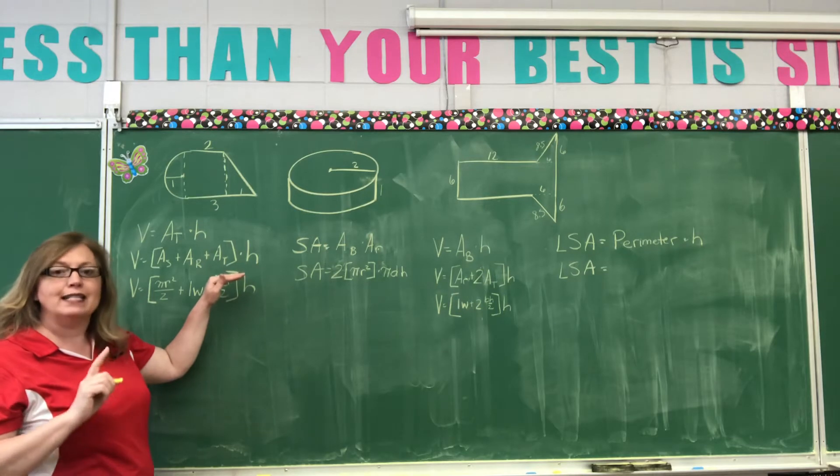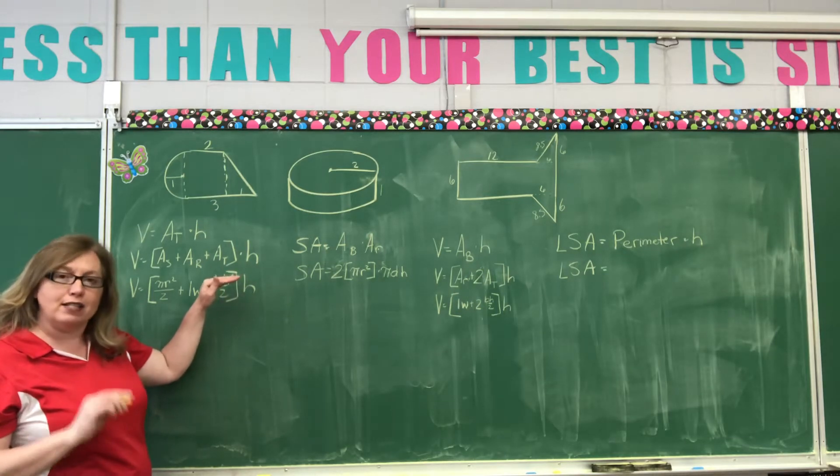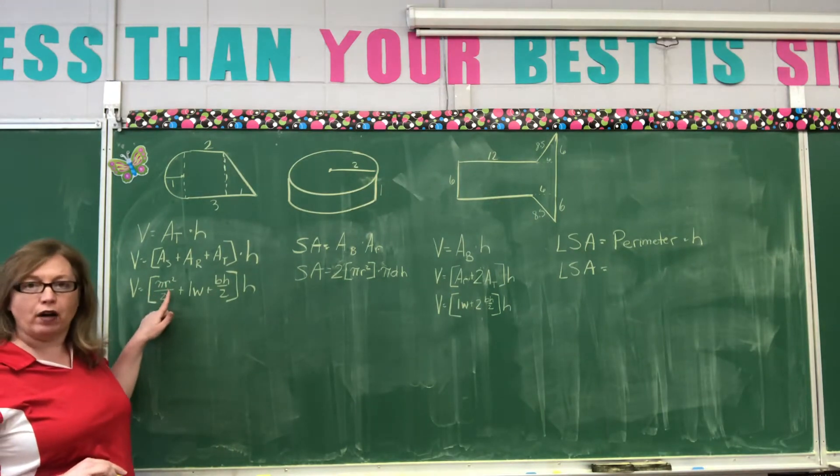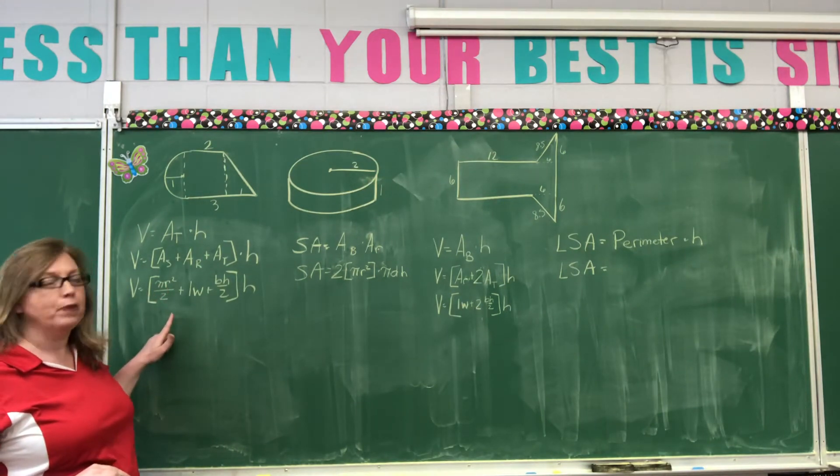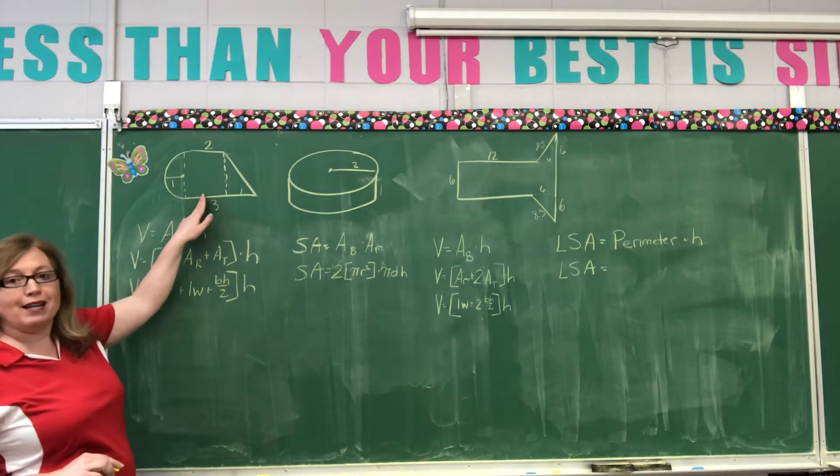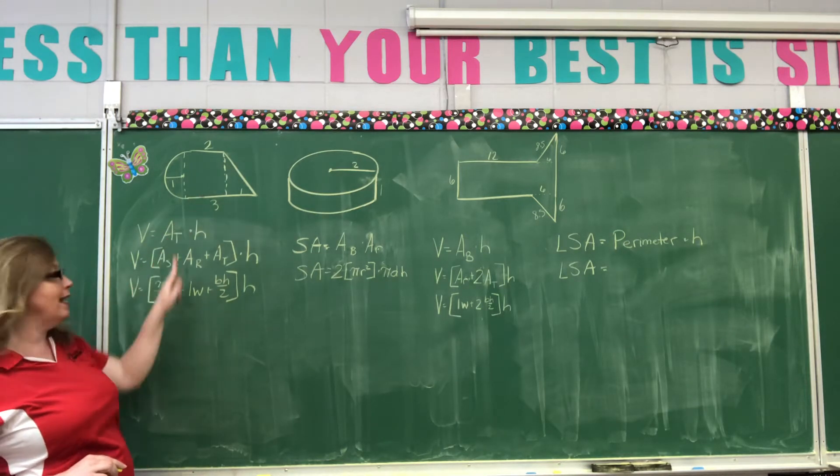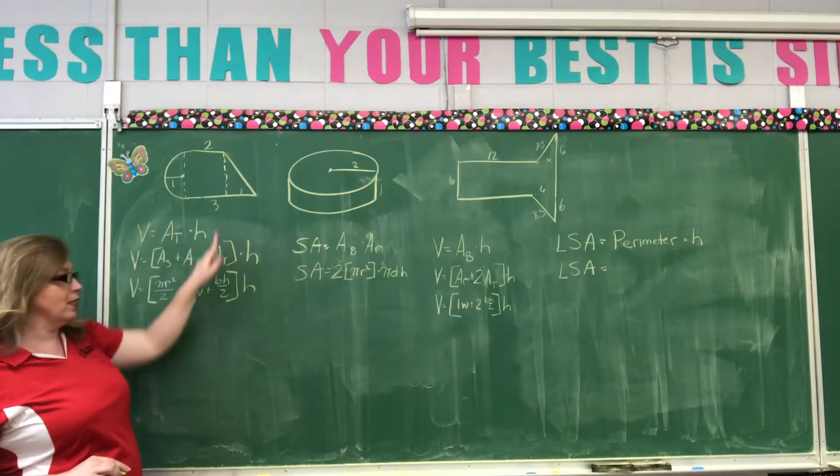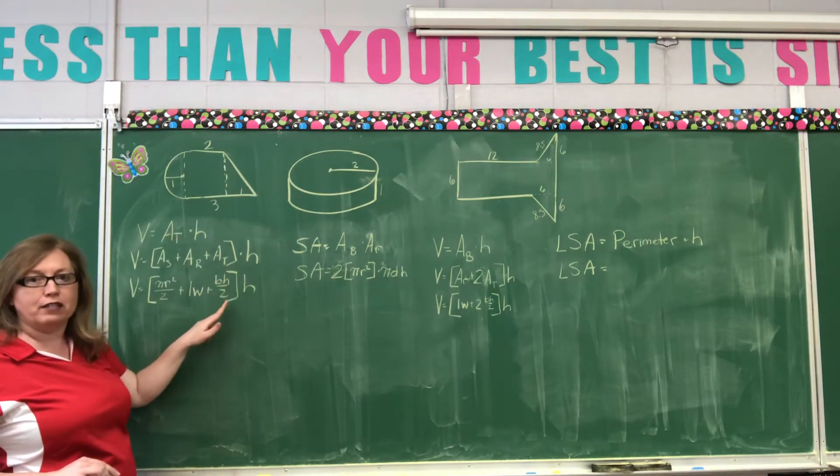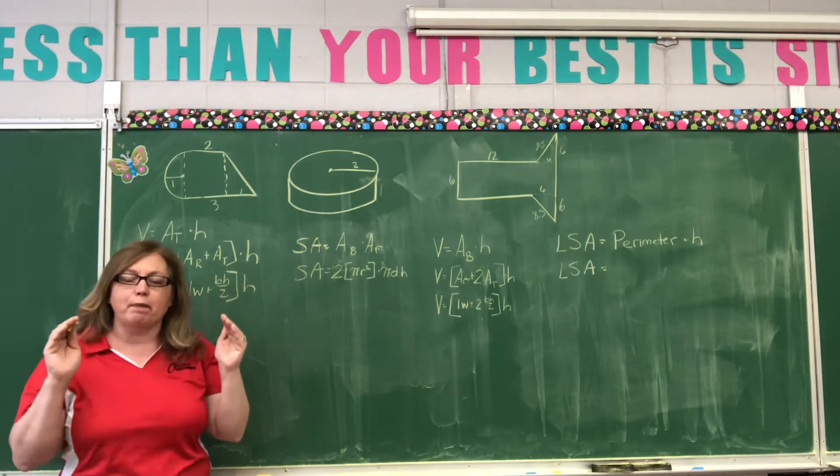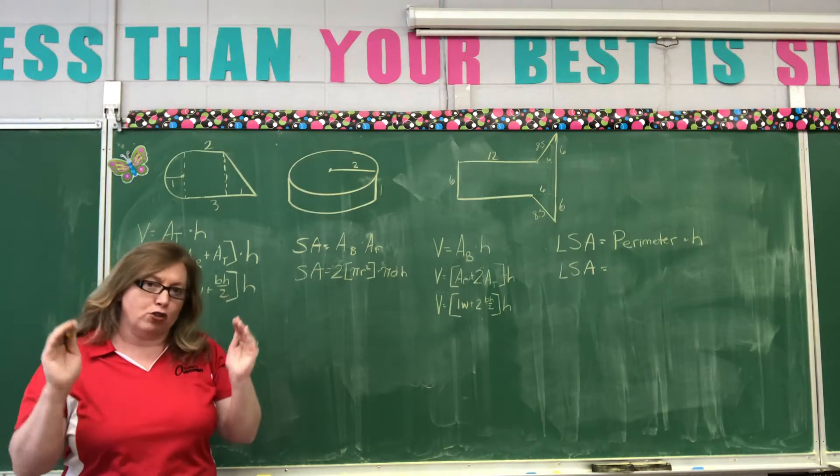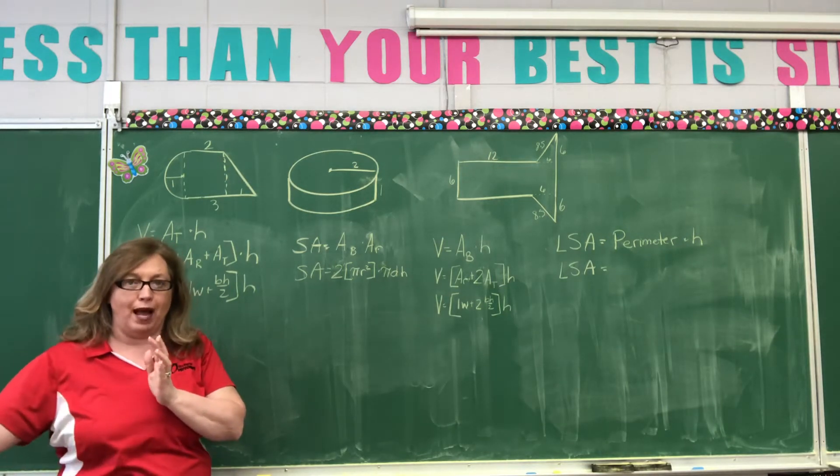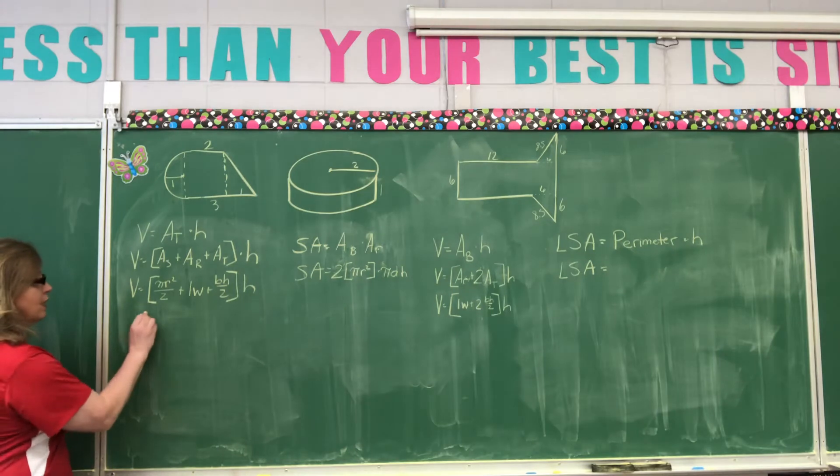How do you find the area of a semicircle? Well, you say pi times radius squared divided by 2. To find the area of the rectangle, we're simply going to say length times width. To find the area of the triangle, we're going to say base times height divided by 2. Put all of that inside brackets because you have to solve that, add them together, then multiply by the height. So, now let's do this.